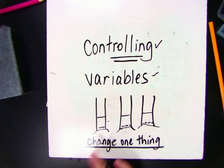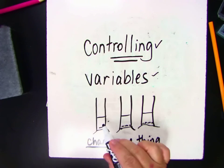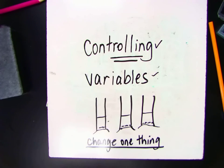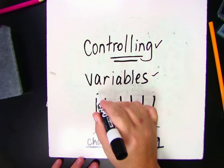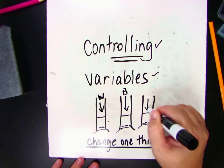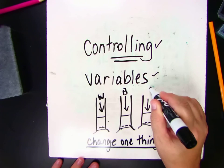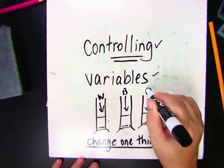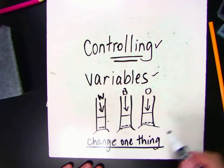So everything is fair right now, but then scientists need to change one thing, because they want to find out something. And when we did our experiment, the one thing we changed was what we fed the yeast. This one, we fed it white sugar. This one, we fed it brown sugar. And this one, we fed nothing. We didn't feed it anything.